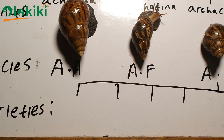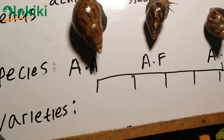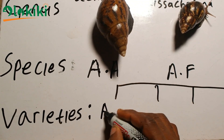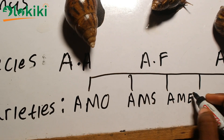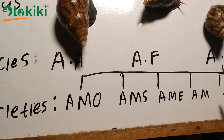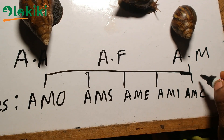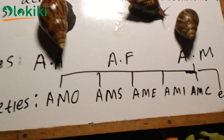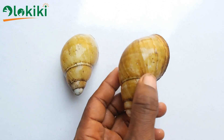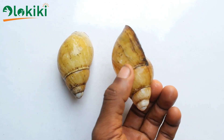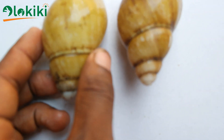At this point we have a better understanding of Achatina marginata and its varieties. For a quick recap: we have Achatina marginata ovum, Achatina marginata suturalis, Achatina marginata egregia, Achatina marginata actorica, and Achatina marginata candefacta, among other varieties not listed in this video. The candefacta variety is a white-shelled snail and is not really commercially found in Nigeria, so it won't be focused on here.